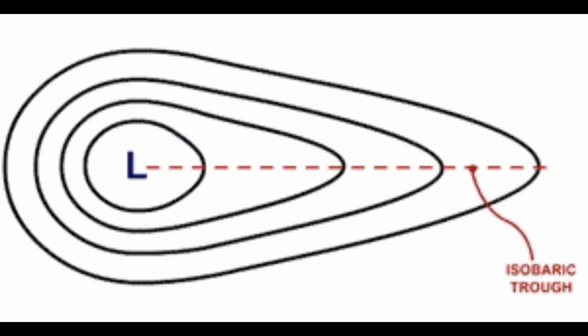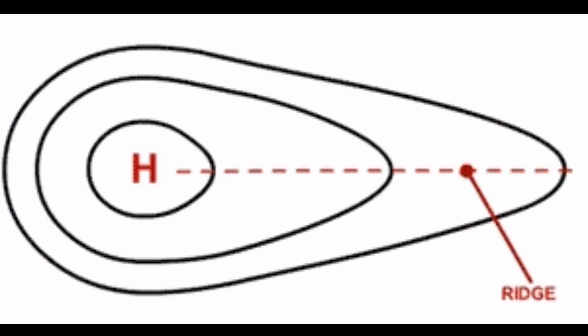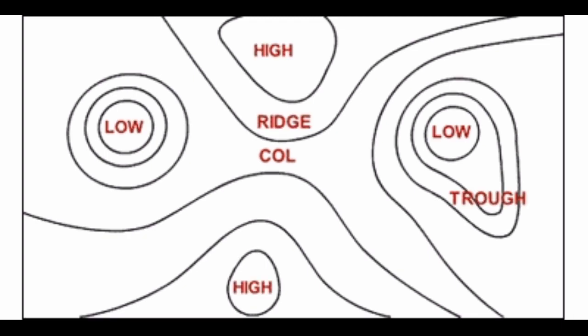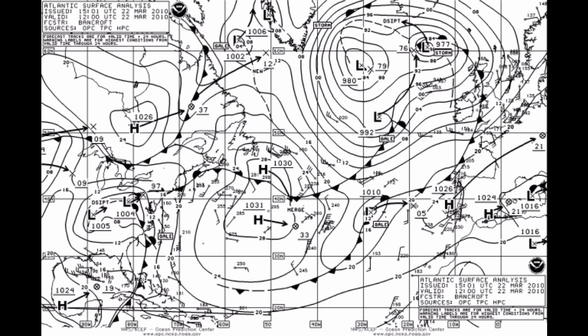Troughs are elongated extensions of areas of low pressure. A col can be identified as an area of slack pressure between two anti-cyclones and two depressions. The following diagram summarizes the appearances on a weather chart of the main types of pressure systems, and shown here is a synoptic chart.